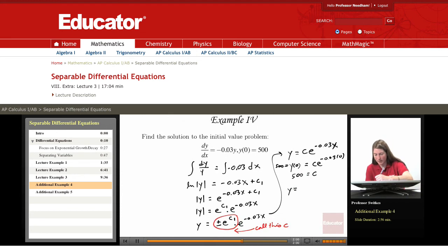So we get y equals 500 e to the negative 0.03x. Okay so that is our solution to this initial value problem.